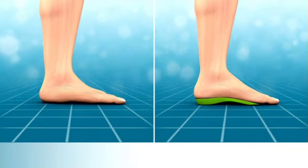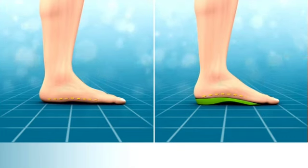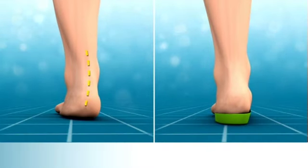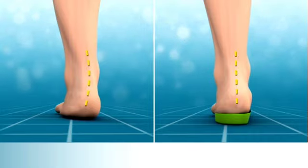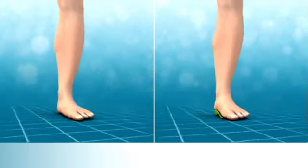A decrease in the amount of pronation with the use of the Scholl Biomechanics three-quarter length heel and knee pain reliever reduces the lowering of the arch, reduces the tilting of the heel bone, and reduces the inward rotation of the leg.